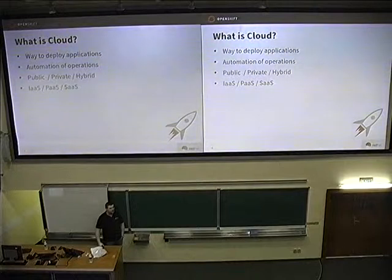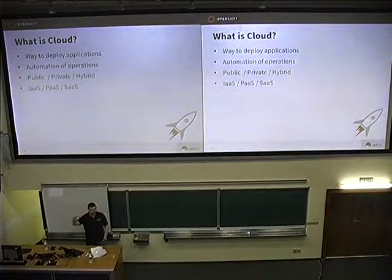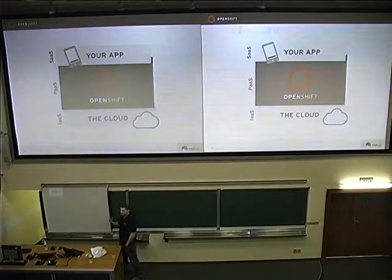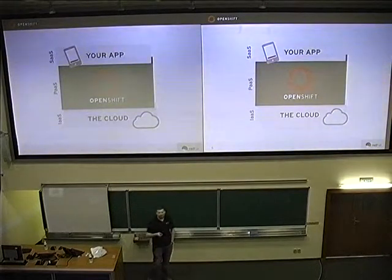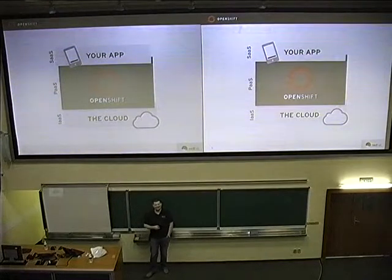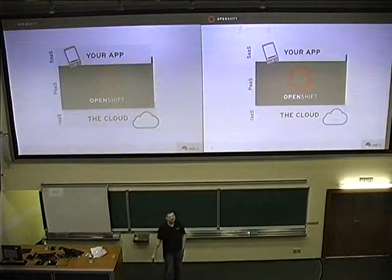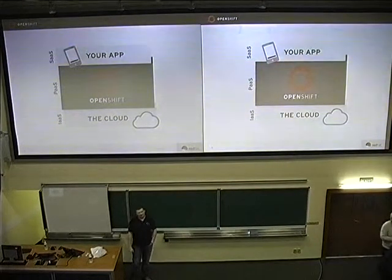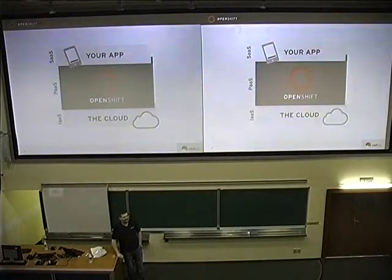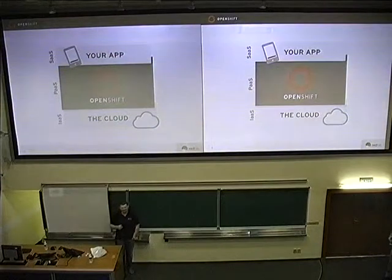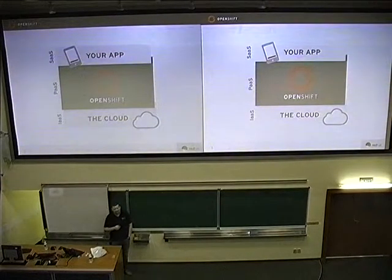We have three layers in cloud computing: infrastructure, platform, and software as a service. I like this picture because it makes it quite clear. Two layers come in one group and one is in a separate group. The separate one — software as a service — targets end users. Google is providing email to my dad. Platform and infrastructure provide services to the developers who provide that service.